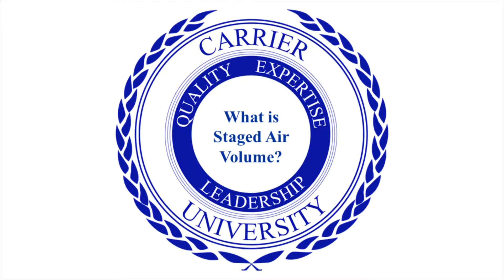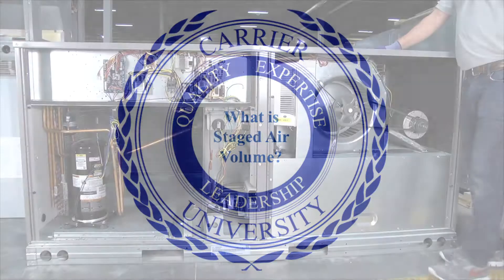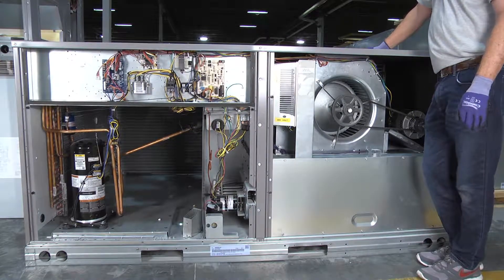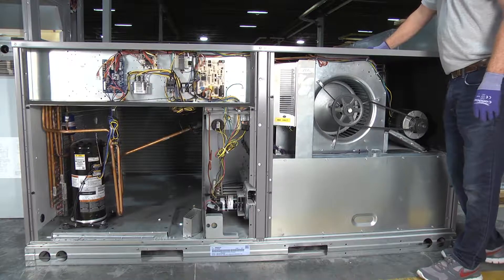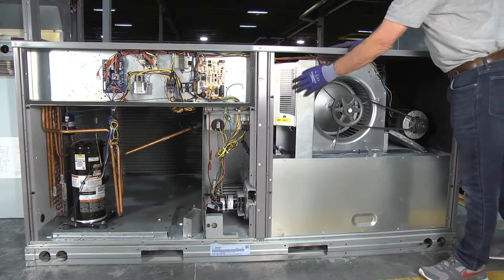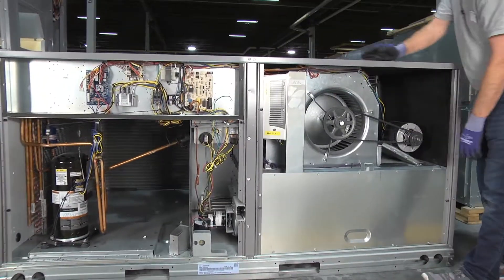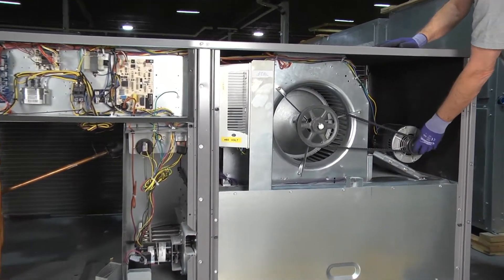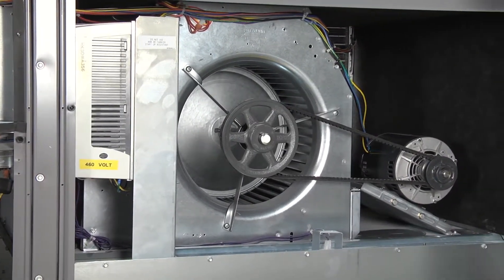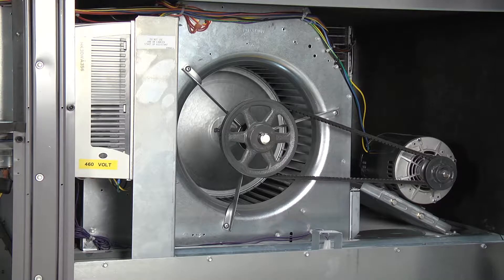Today we are going to talk about Staged Air Volume, or SAV units, and what's the difference between a Staged Air Volume unit and a typical rooftop unit. The Staged Air Volume unit is going to have a VFD, or Variable Frequency Drive. The VFD will control the blower motor to two distinctive speeds: a low speed for ventilation and first stage cooling, and a high speed for heat and second stage cooling. This is pre-configured at the factory.